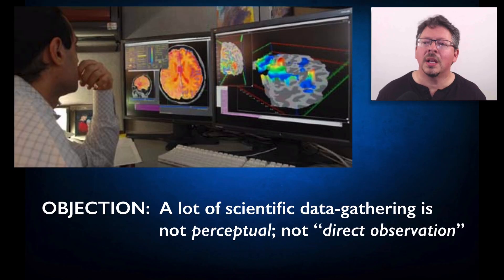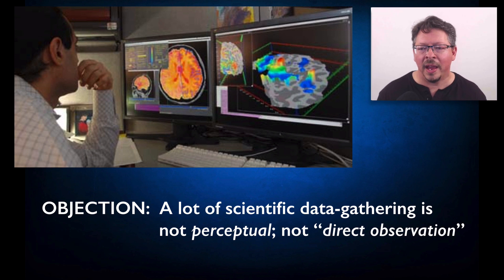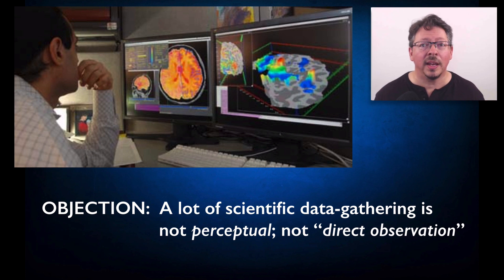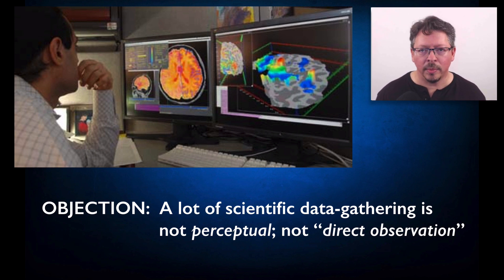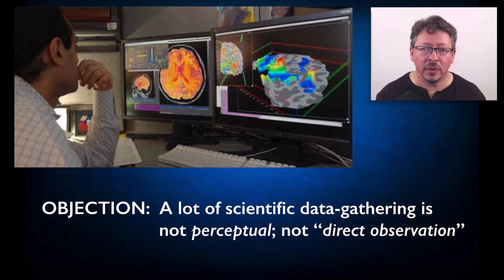Here's another example. This is a scientist examining brain scans of a patient using fMRI technology. FMRI stands for functional magnetic resonance image. The colors on the computer screen indicate different levels of electrical activity in different regions of the brain as a patient performs some cognitive task. We use this kind of data all the time to test theories about how brains function. But here's the question: what exactly is the scientist observing? How are these images actually created?